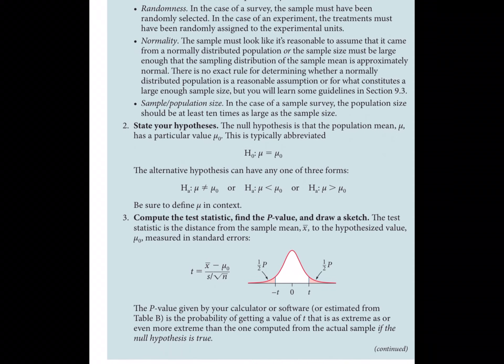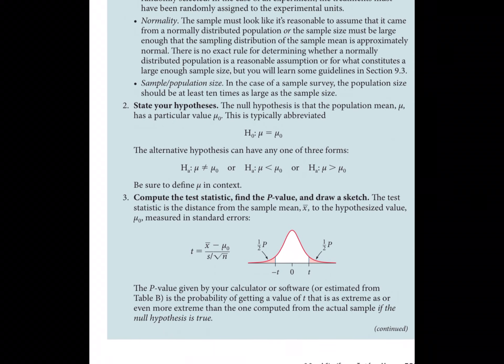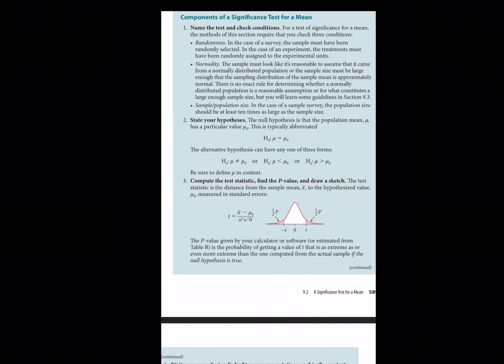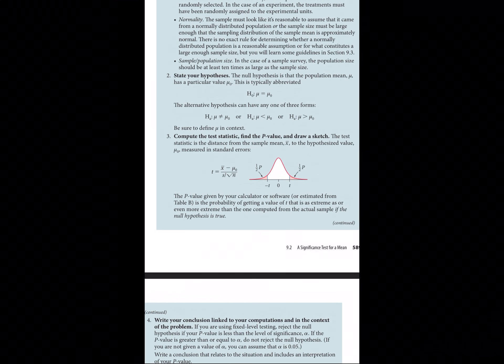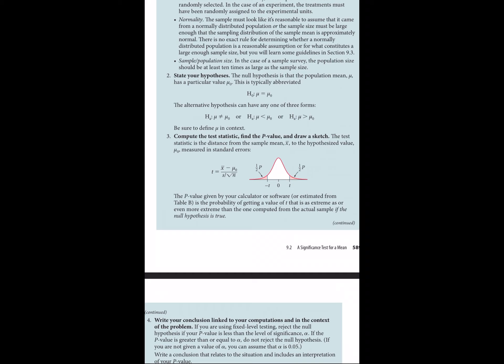We still get a p-value that is analyzed exactly the same way as with a z-test. Make sure to write your conclusions in the context of the problem, stating that you're talking about the average and not a percentage, since you're now working with a mean.